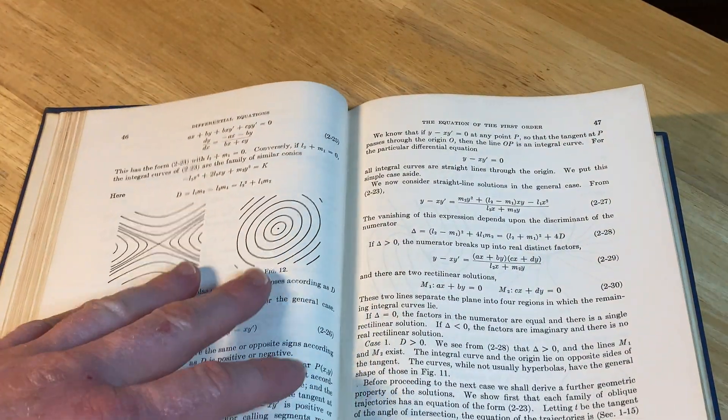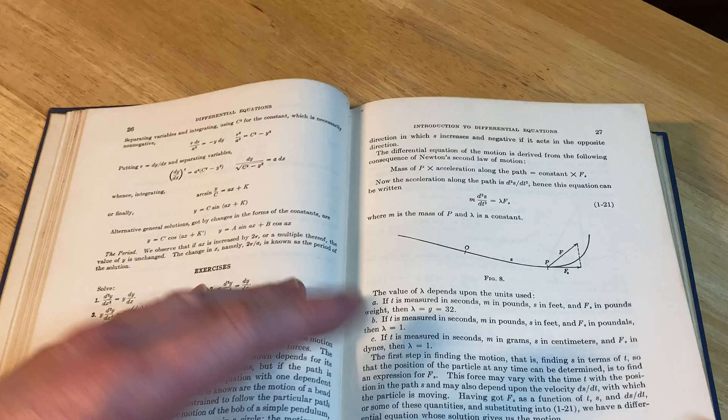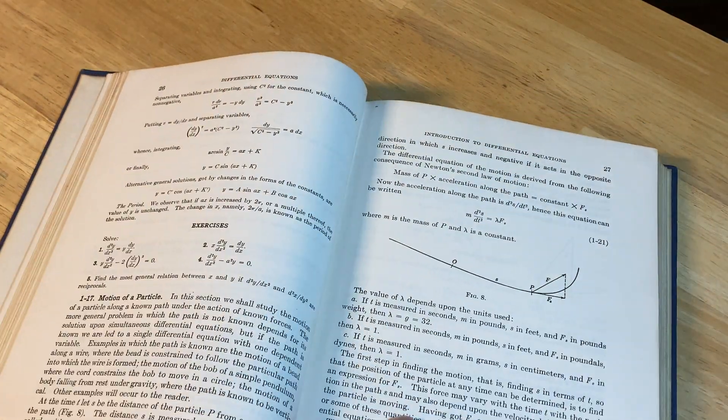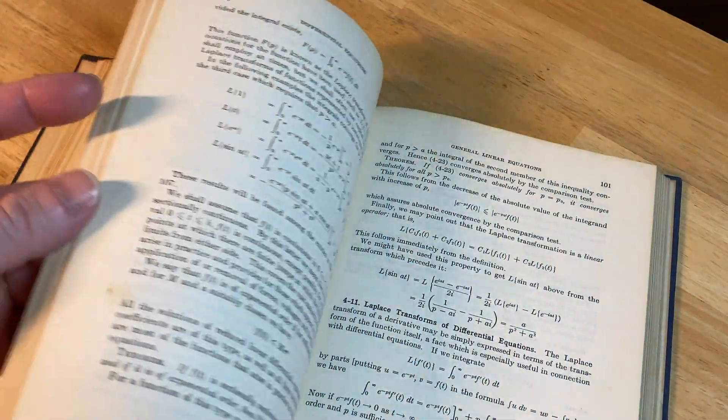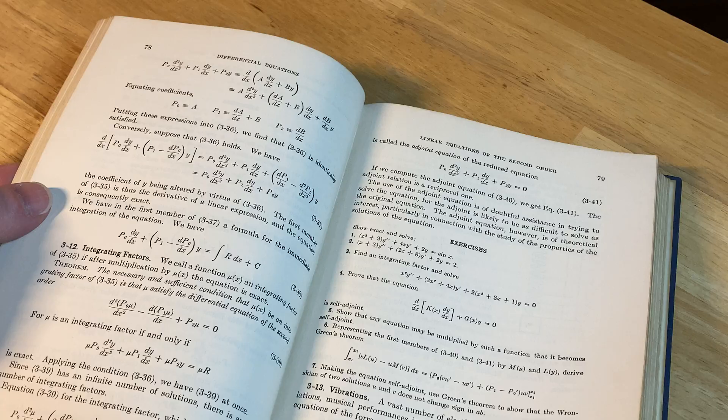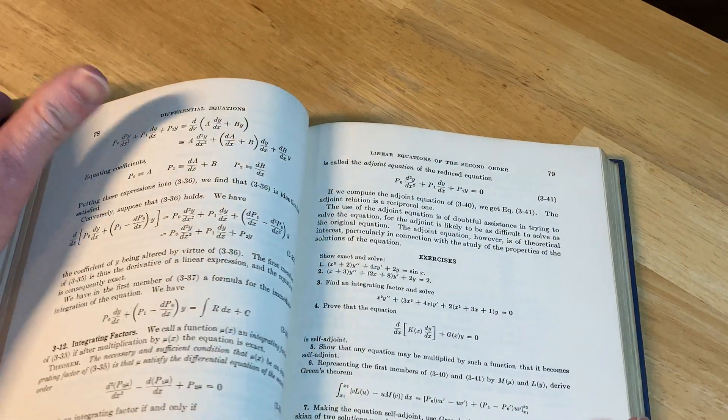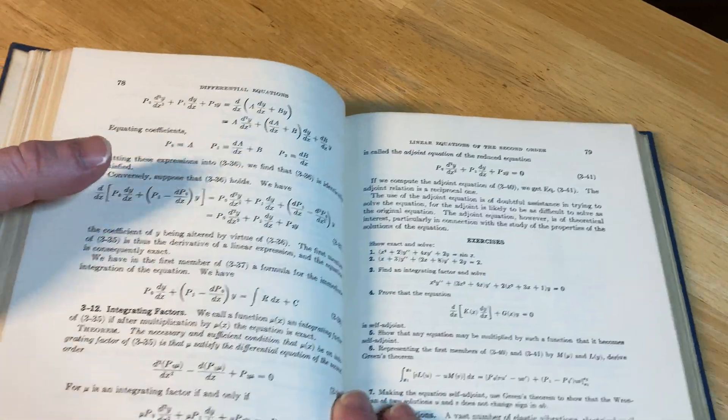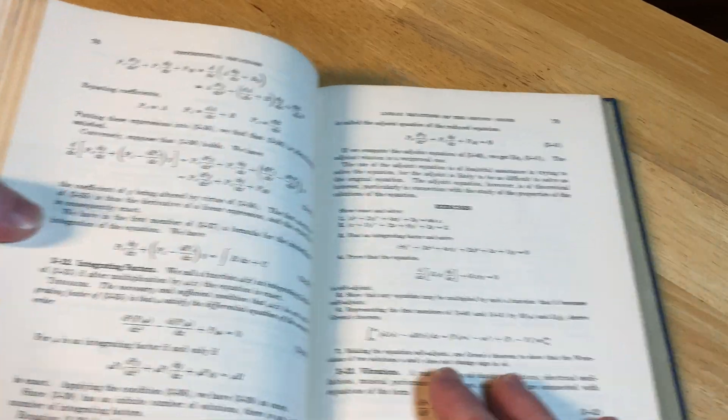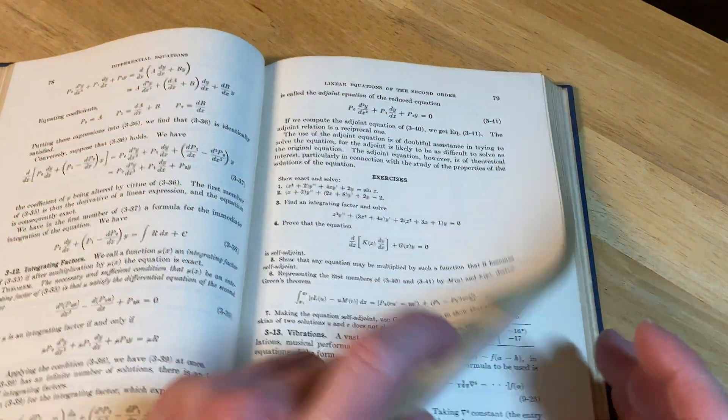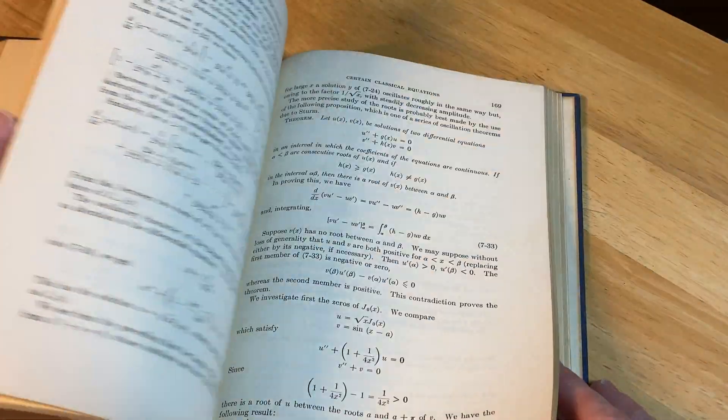Now there are things in this book that you are definitely not going to be doing in your course. Usually courses cover just small portions of books. Books are way more comprehensive. They have way more material than can be covered in a course because of time. Time is an issue.